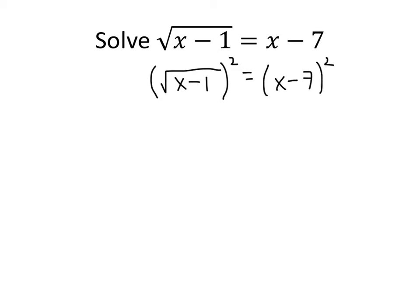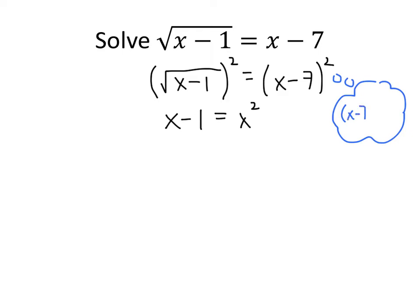On the left-hand side, when we square a square root, the square root goes away and we just get x minus 1. On the right-hand side, when we square x minus 7, we need to multiply x minus 7 times x minus 7. That works out to be x squared minus 14x plus 49.